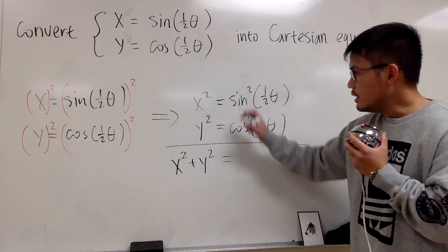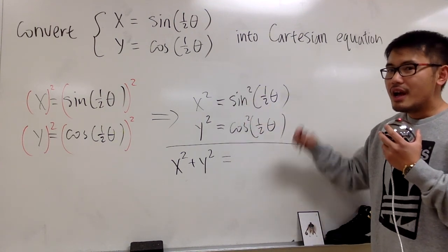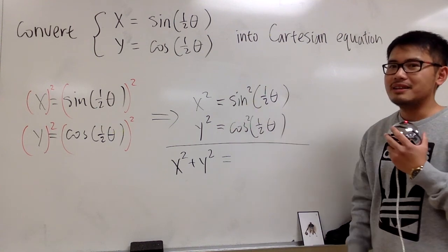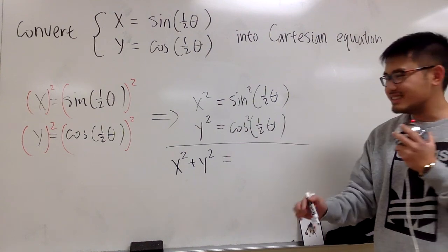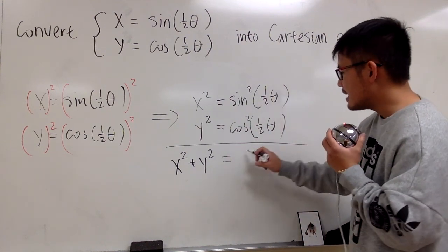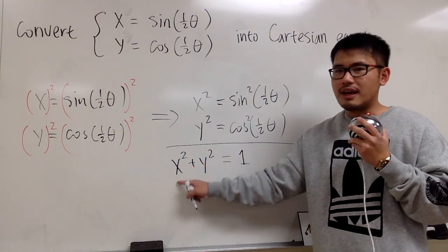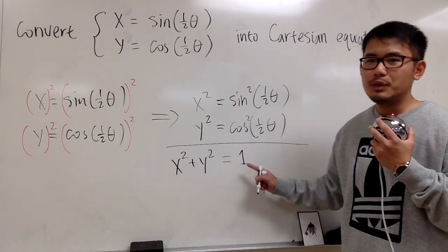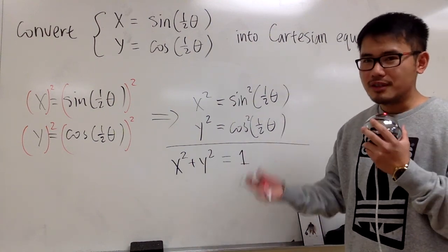And this equals—what's sine squared plus cosine squared? As long as the angles inside are the same, sine squared plus cosine squared gives you one. So at the end, the right-hand side is just equal to one. So as you can see, we just have x squared plus y squared equals one. And as you know, this is the equation of a circle.